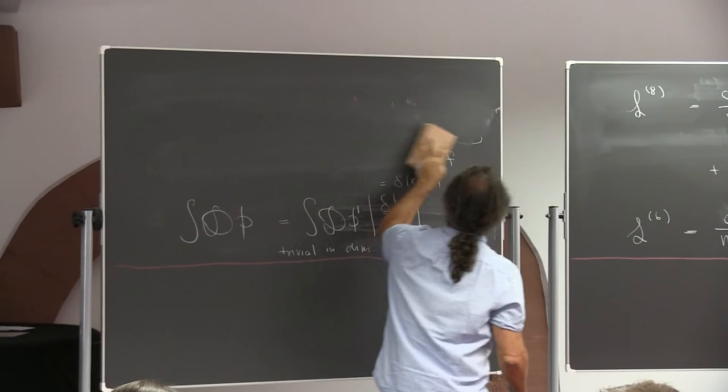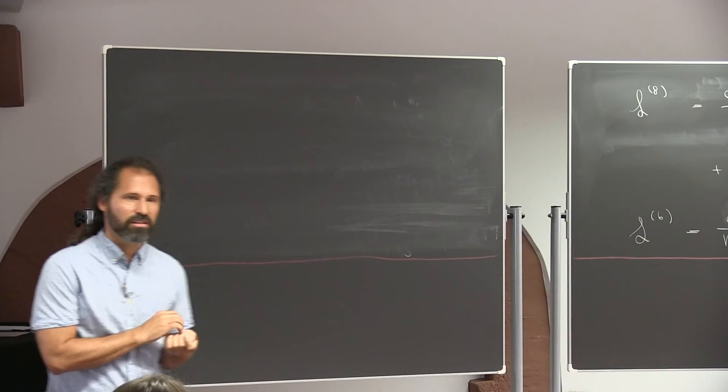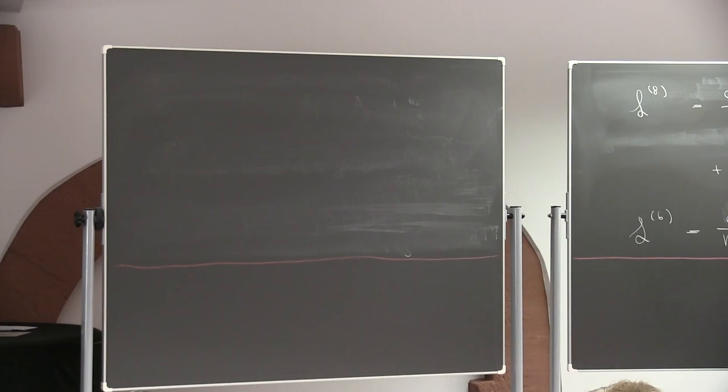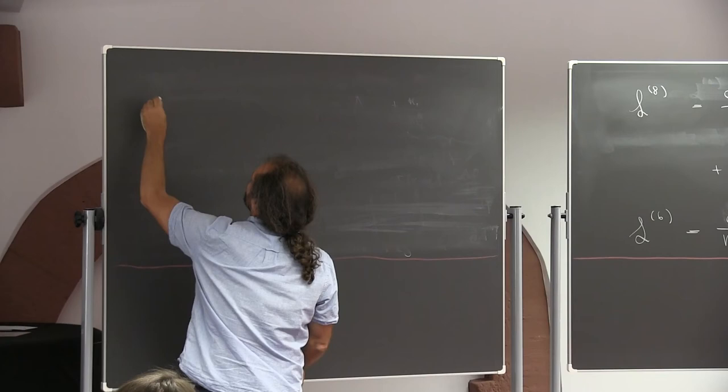So in our multi-step program of setting up an effective field theory, the next step would be matching. But before matching, I want to show that even if you can't do the matching, you can get interesting results from this effective Lagrangian. In our heart, what we're really doing is constructing the Standard Model effective theory where we don't have the full theory yet. So we'll use the operators with unknown coefficients to do photon-photon scattering.